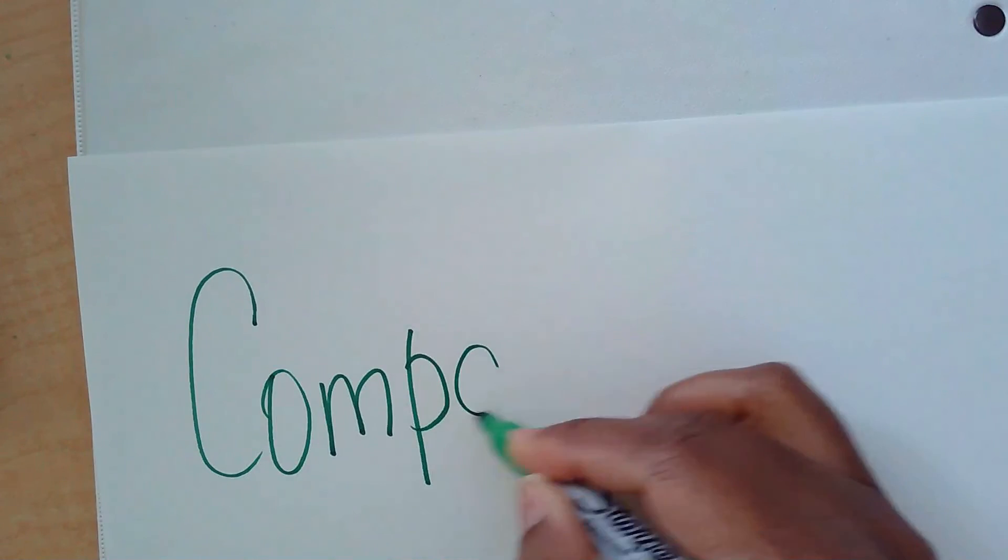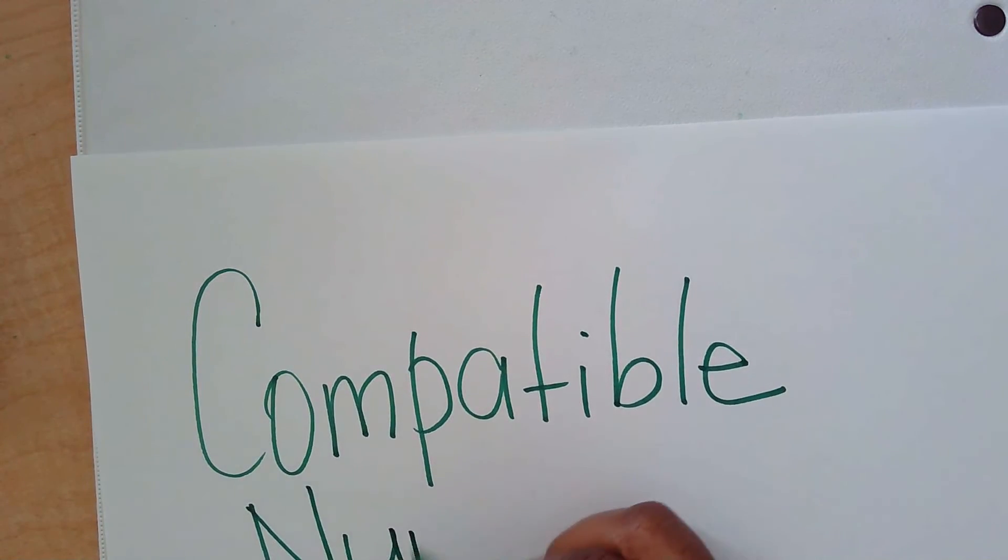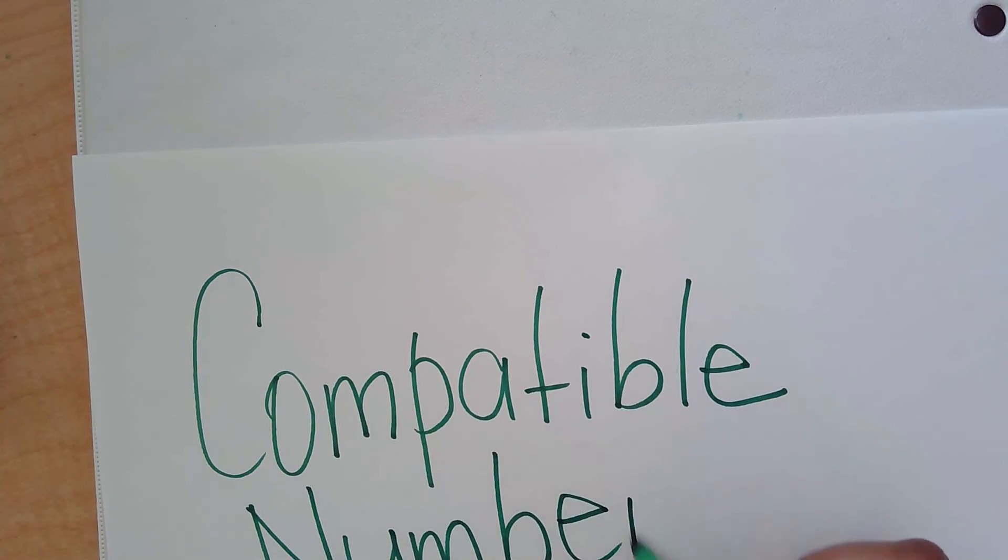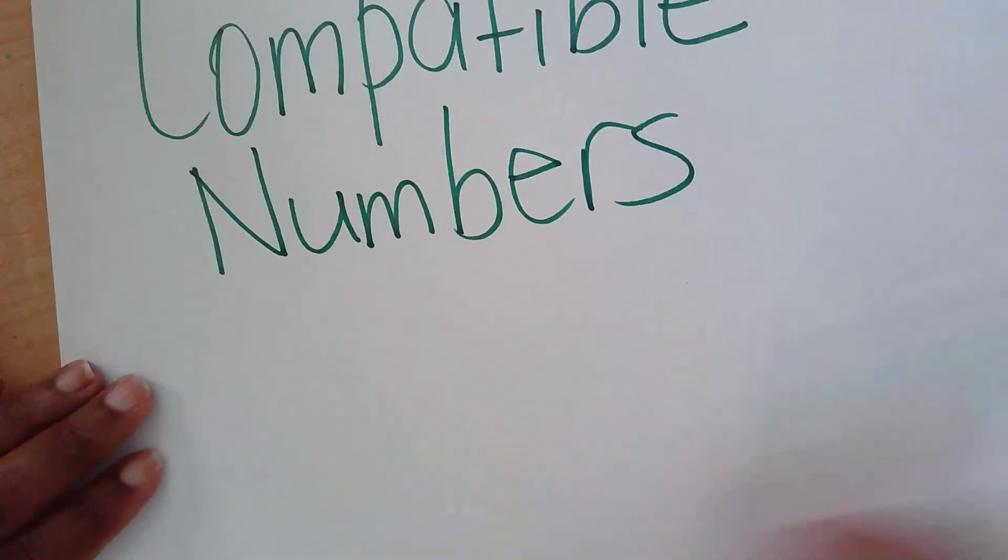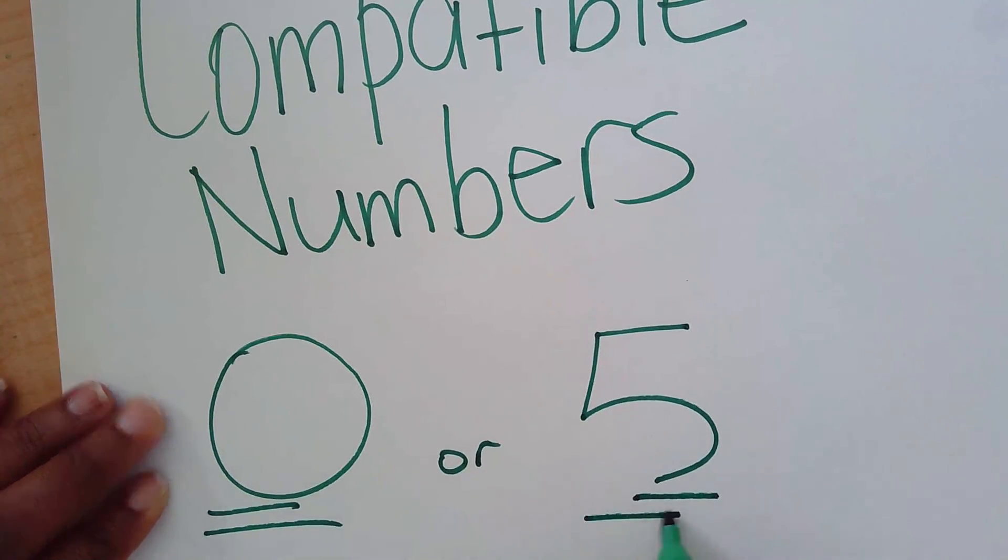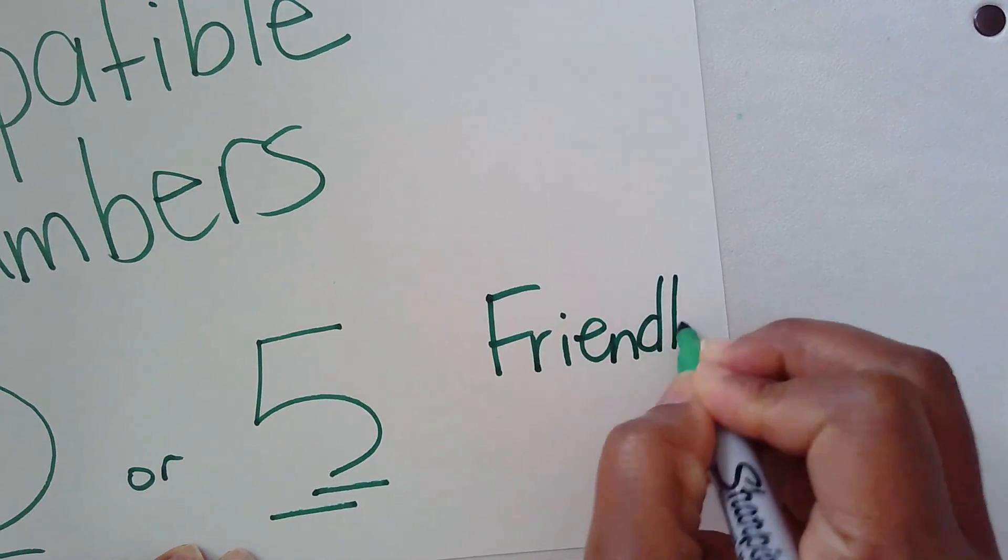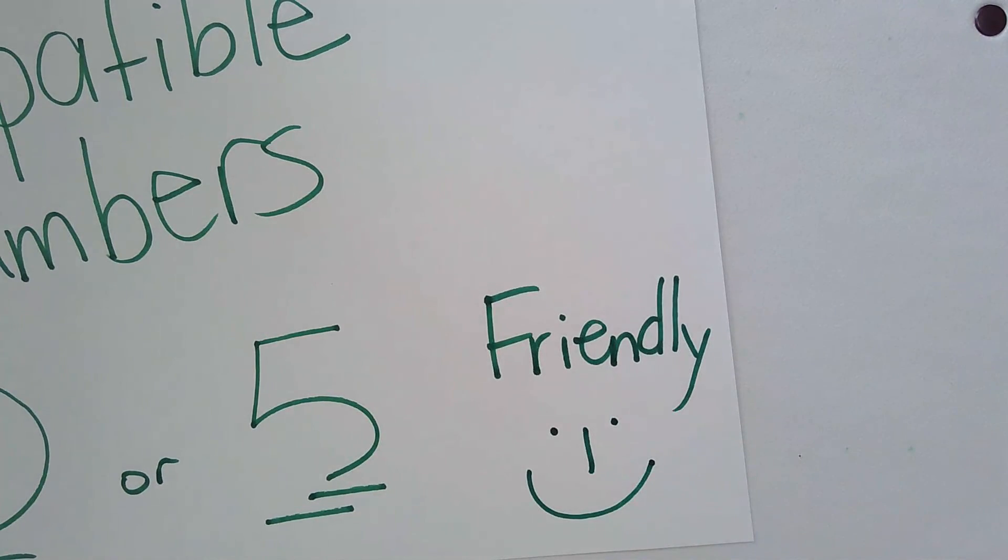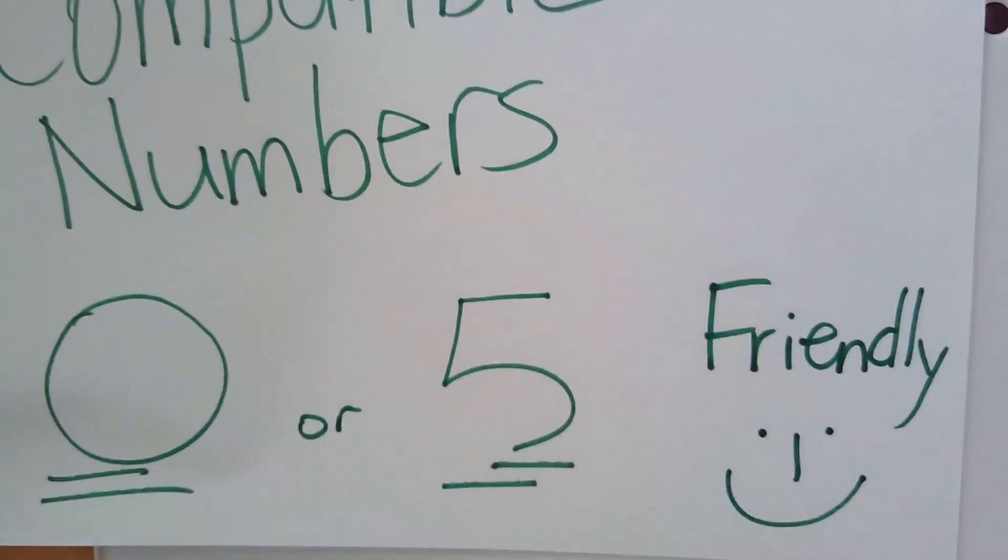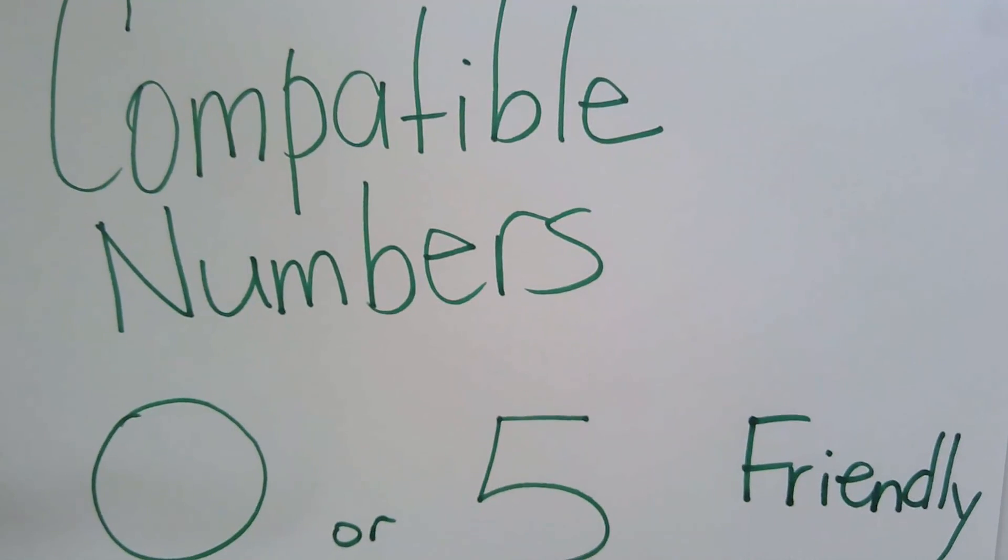If it's one thing you should leave this video with, you should remember that compatible numbers end with a 0 or 5, and that makes them friendly. That's all for today's lesson. Hope you can join me another time. Toodles!